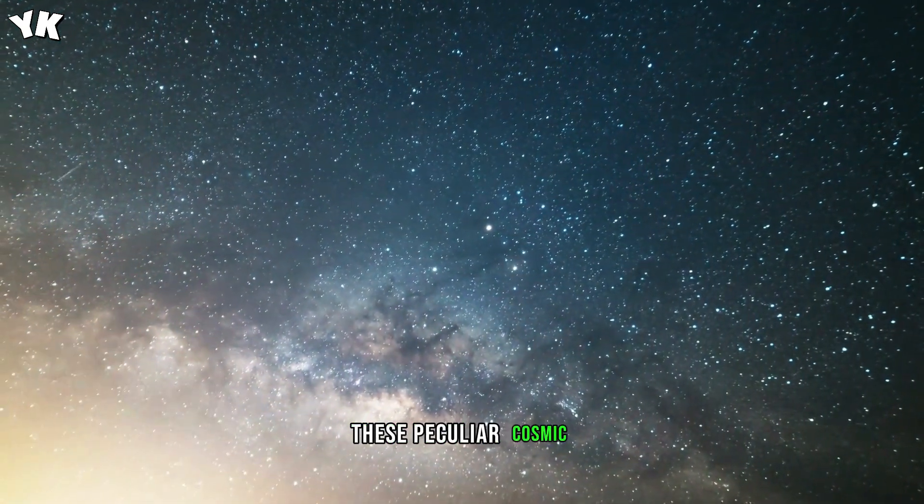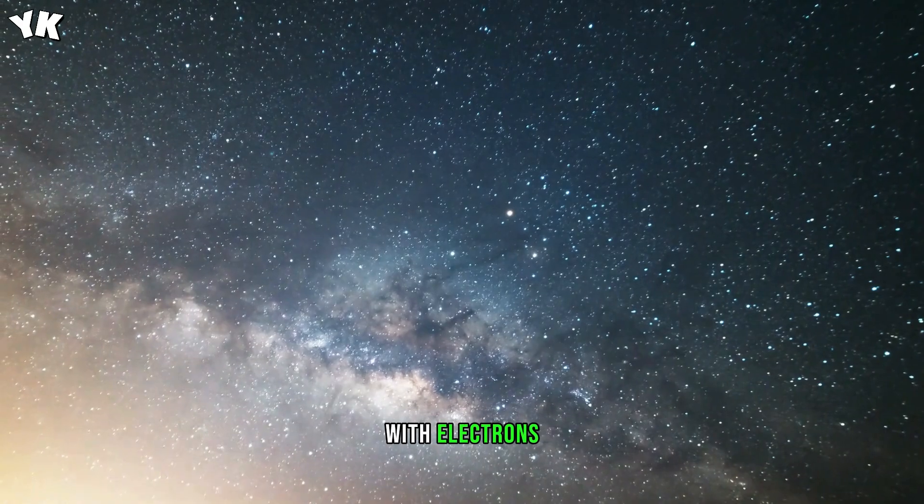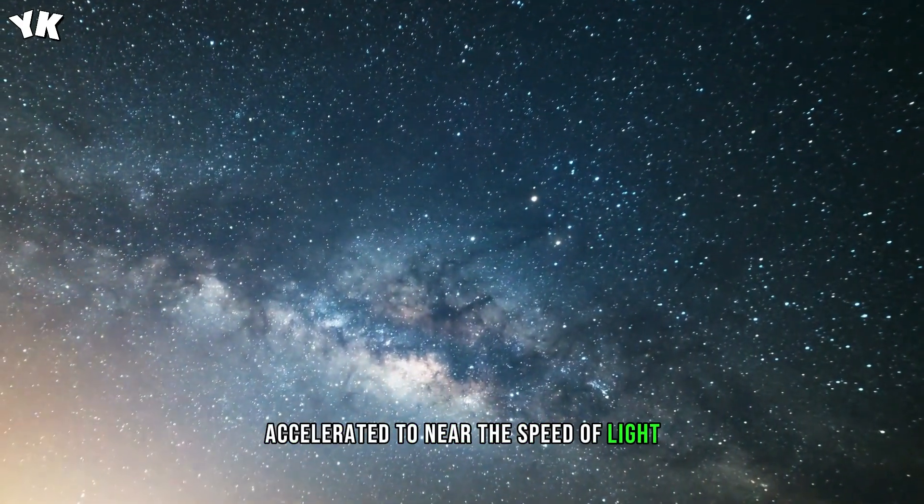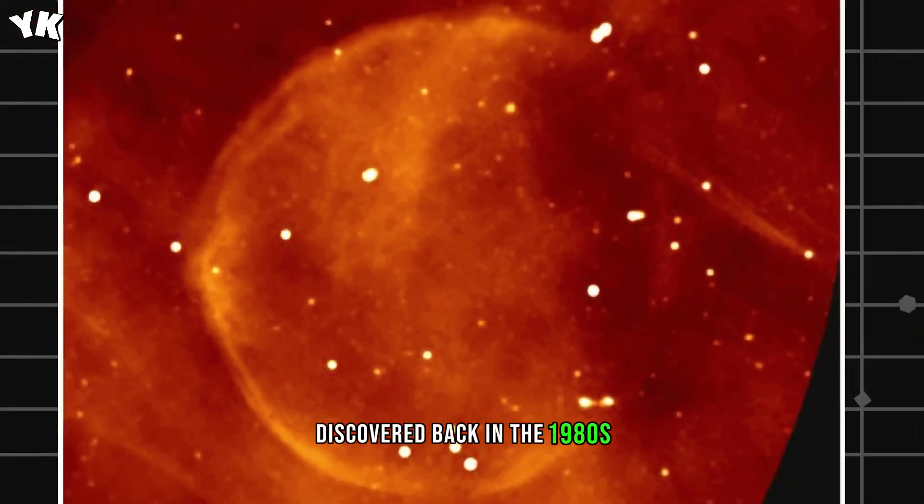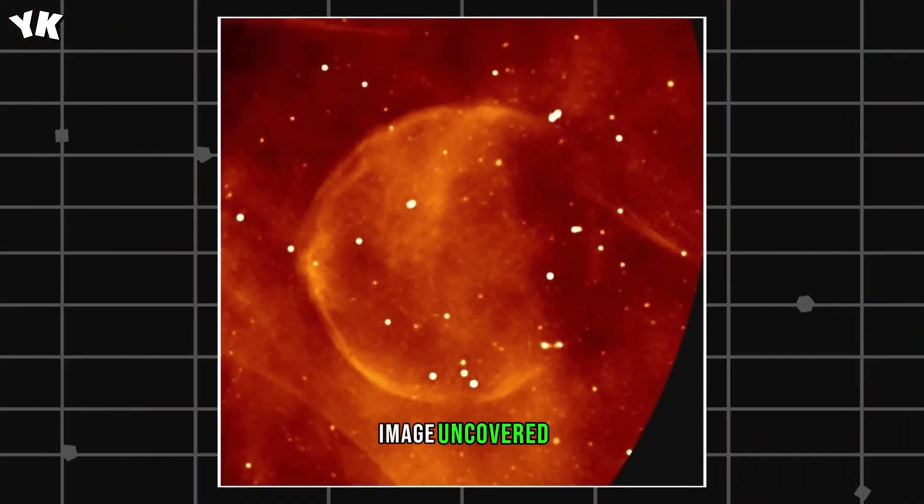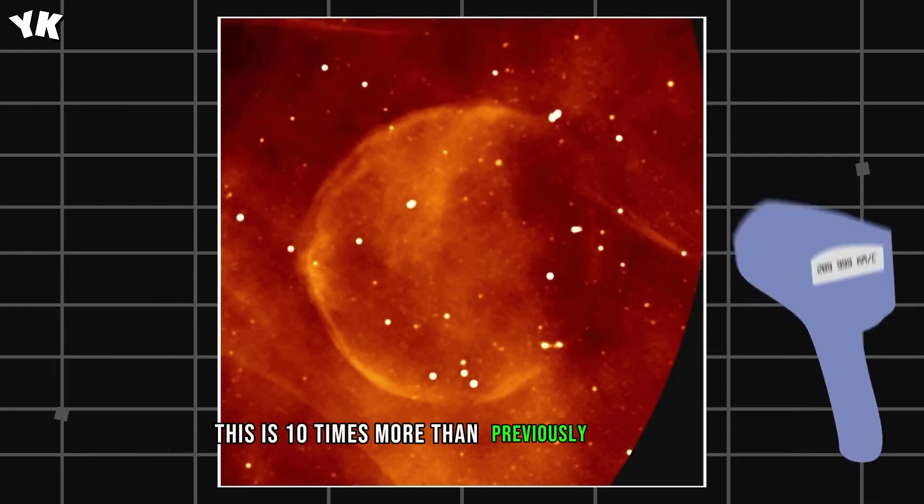They are separated from each other by about one astronomical unit. These peculiar cosmic wires are pierced with electrons accelerated to near the speed of light. The mysterious filaments were first discovered in the 1980s, and the new MeerKAT image uncovered thousands of new ones, ten times more than previously discovered.